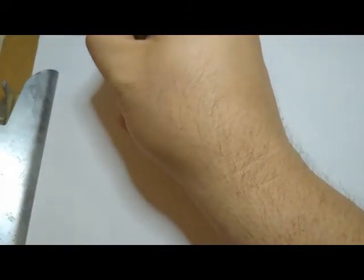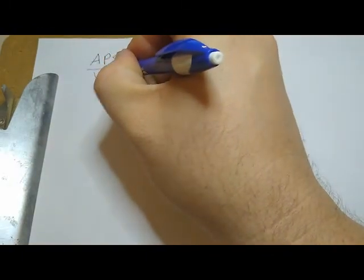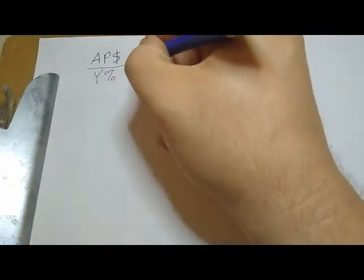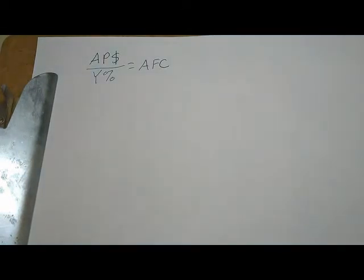We are continuing our meat math, CA-155 math, by working on adjusted food cost. The formula for adjusted food cost is: as purchased price (AP $) divided by yield percentage (Y%) equals AFC, or adjusted food cost.